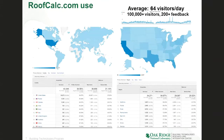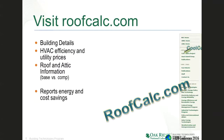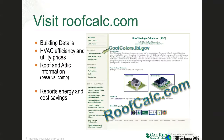The calculator has been used fairly prevalently — about 64 visitors per day since 2010. It's very popular in hot states that are interested in cool roofing, like California, Texas, and Florida. If you go to roofcalc.com, you should see a website that looks like this.